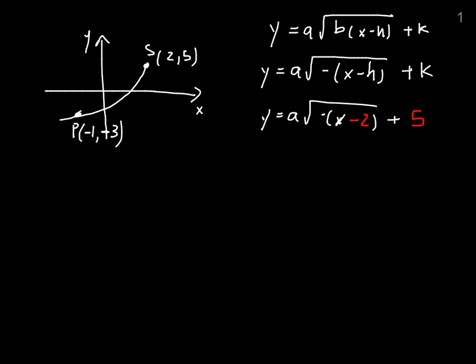And from here now I want to solve for a by taking point P, plugging it into x and y, and since a is the only thing I don't know, I can solve for a. So point P gives me -3 = a√[-(-1) - 2] + 5. This gives me -3 = a√[-1 - 2] + 5.